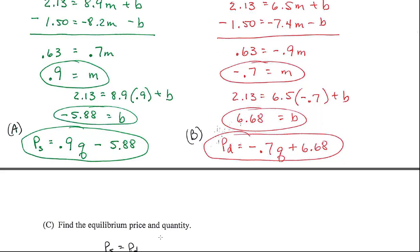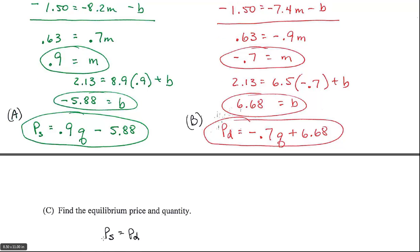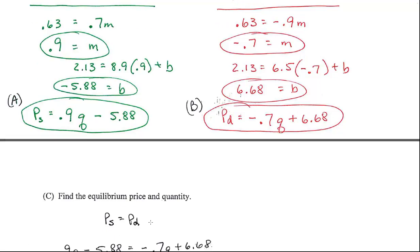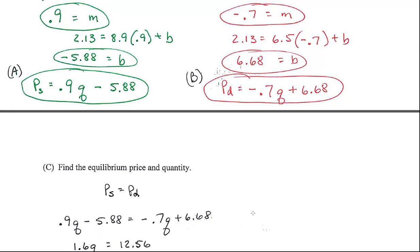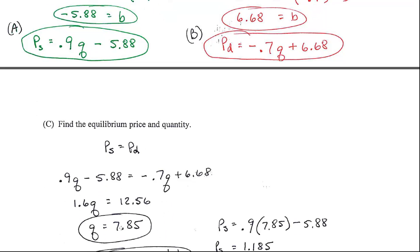The C part comes up. Find the equilibrium price and quantity. For it to be equilibrium, that means they must be equal. So you set the price supply equal to the price demand equation. Thereby, I've got one equation, one unknown, that I can solve for. So my quantity, my equilibrium quantity came out to be 7.85.